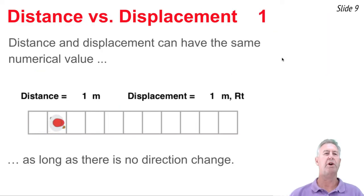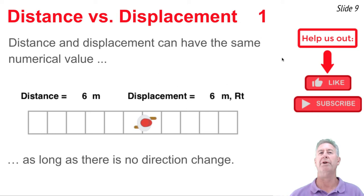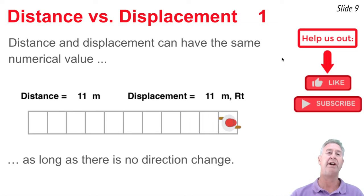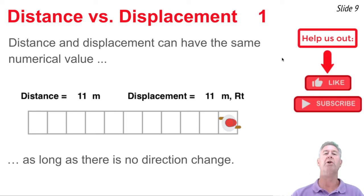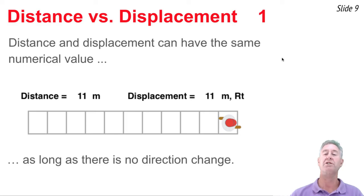Displacement is a vector, and as such it's aware of direction changes — that's what makes displacement quite different from distance. Here we see a person walking to the right, and every step takes them a meter further rightward. In this example, the person's distance and displacement always have the same numerical value. When done — 11 meters — the distance walked is 11 meters, and the displacement is 11 meters rightward. Distance and displacement have the same numerical value as long as there's no direction change.